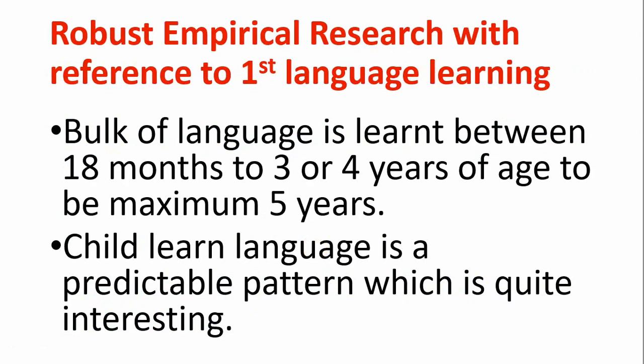Let's look at the robust empirical research on first language learning — research that examines how a child learns language and the timeframe required to fully acquire the native language. The bulk of language is learned between 18 months and three to four years of age, up to a maximum of five years. It is like a miracle: a child learns an entire complex language in just three to five years, so beautifully that researchers worldwide find it fascinating and amazing. Children learn language in a predictable pattern.